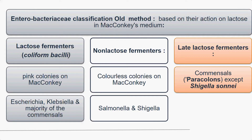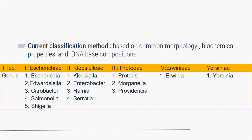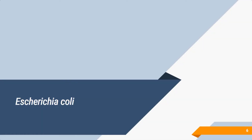The old classification was based on lactose fermentation using MacConkey medium. Lactose fermenters give pink colonies — classical examples are E. coli and Klebsiella. Non-fermenters produce colorless colonies — that is Salmonella and Shigella. Late lactose fermenters like Shigella sonnei ferment lactose over a longer period. The newer DNA-based classification divides them into tribes: E. coli, Salmonella, and Shigella belong to Tribe 1; Klebsiella and Enterobacter to Tribe 2; Proteus, Morganella, and Providencia to Tribe 3; Erwinia to Tribe 4; and Yersinia to its own tribe.